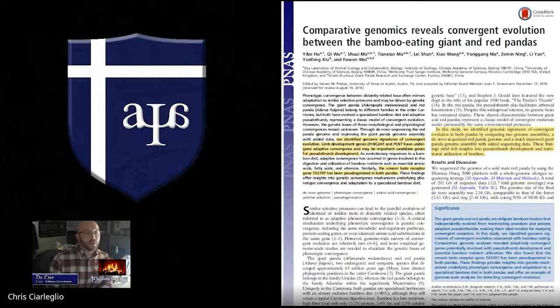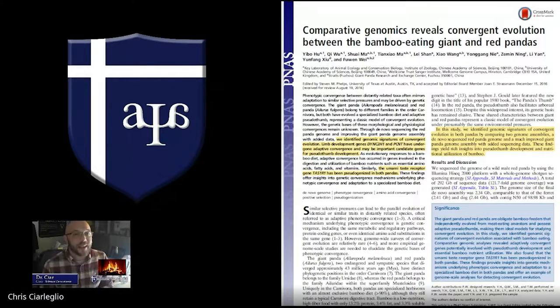Comparative genomics reveals convergent evolution between the bamboo-eating giant and red pandas. This is from 2017. It's a little later than we usually do, but I thought it was a pretty interesting paper.